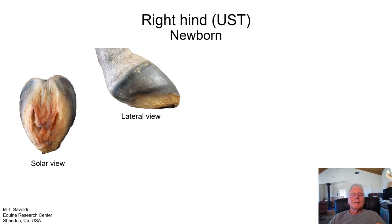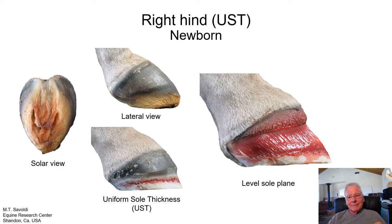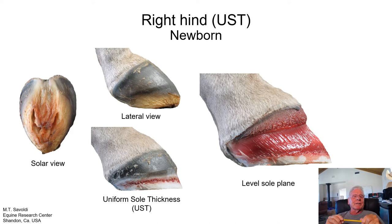Now we can look at the same foal's hind foot and apply the same dissecting protocol as before. We can see that it again has uniform sole thickness. What's interesting about this hind foot is that it has a level sole plane. So you can see that newborns can be born with either a twisted sole plane or a level sole plane. This continues through their whole life — internal and external forces can cause the sole plane to distort. That's what I mean when I say we need to learn how to take an unlevel foot and level it, because it is quite critical for bone health.